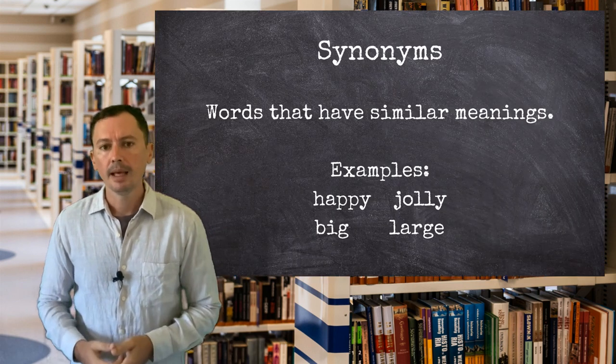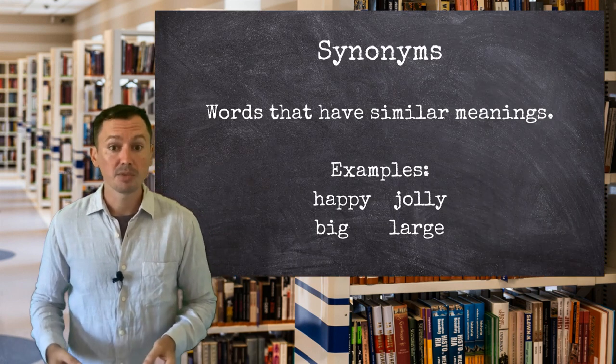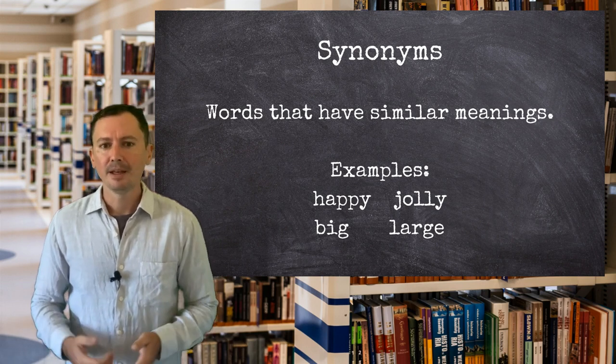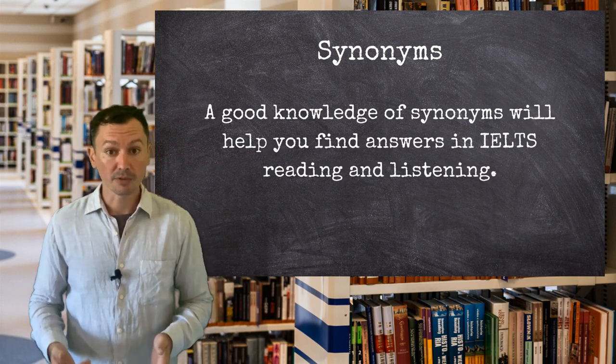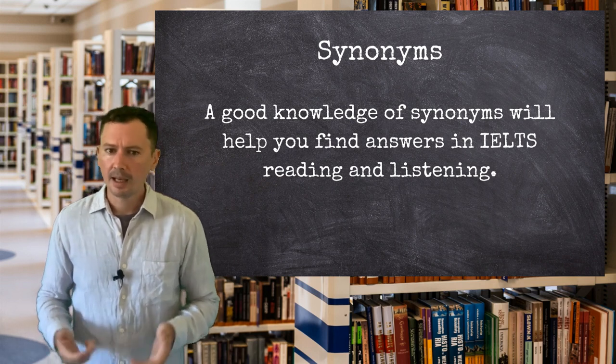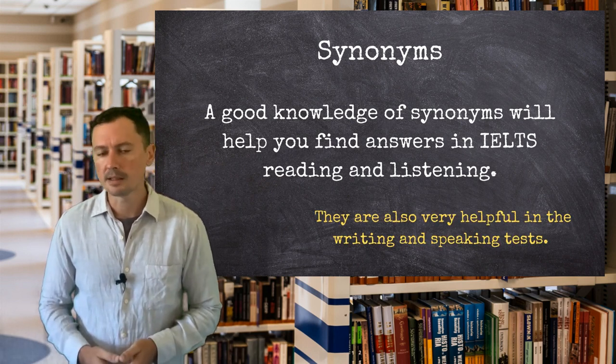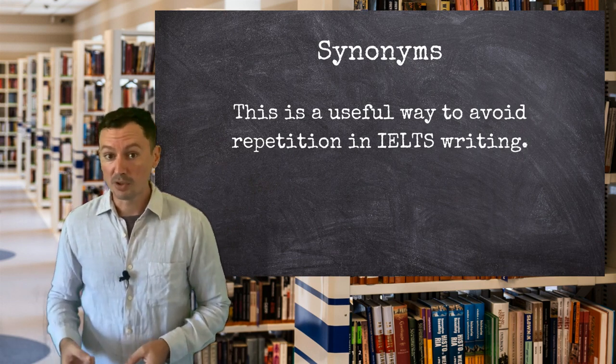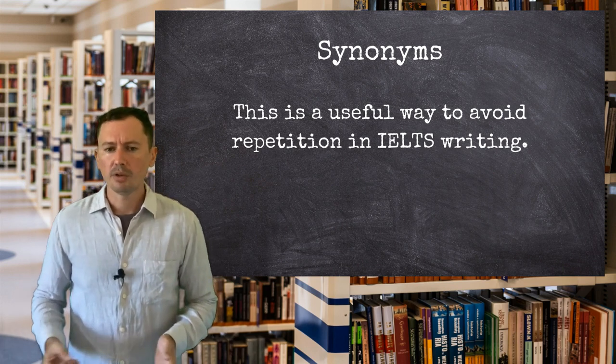Let's now look at three ways you can avoid repetition in order to improve your IELTS essays. Let's start with probably the best known and yet most troublesome way of avoiding repetition: synonyms. As an IELTS candidate, synonyms are your best friend and your worst enemy. You probably know that they are essential for success in the reading, listening, and writing tests, as well as the speaking test to some extent. When it comes to IELTS writing, you can use synonyms to avoid repetition, so they are very useful.